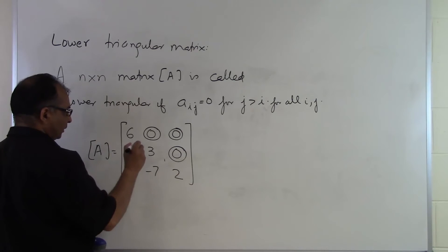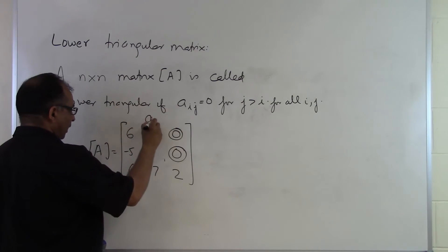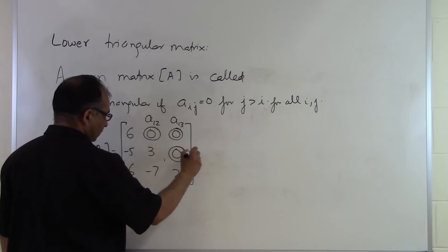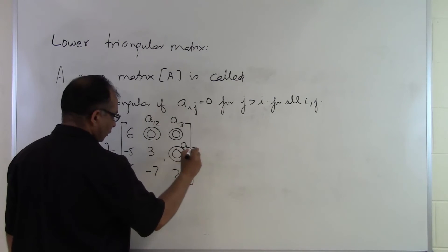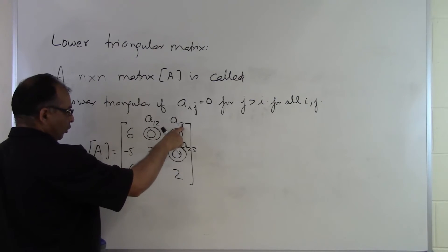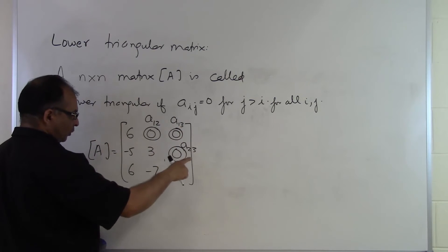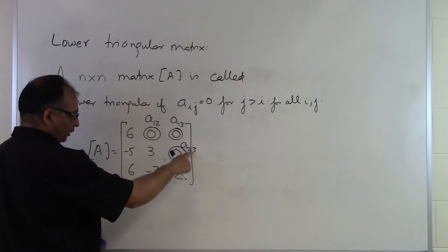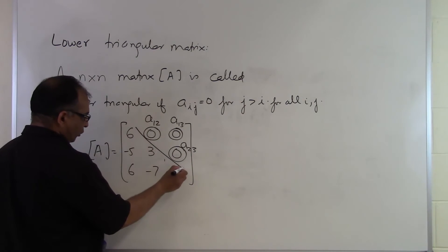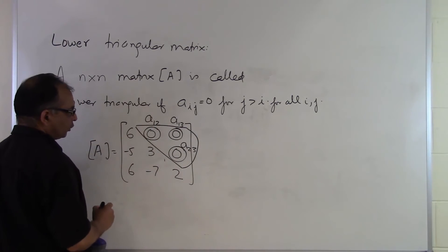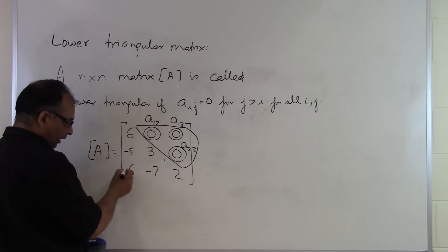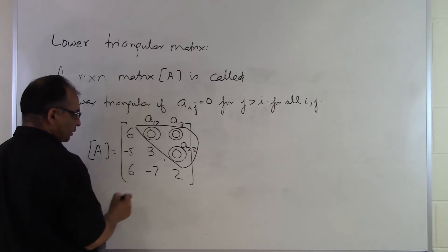Let's look at the element indices. You have A at first row, second column; first row, third column; and second row, third column. In each case, the column number is strictly bigger than the row number — column 3 is strictly bigger than row 1, and column 3 is strictly bigger than row 2. It is because of these zeros that this is considered to be a lower triangular matrix. It does not matter what's on the diagonal and below the diagonal, only what's above the diagonal.